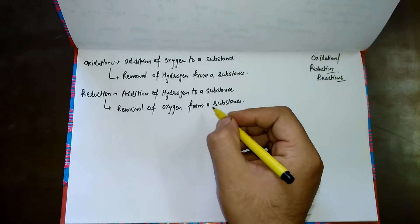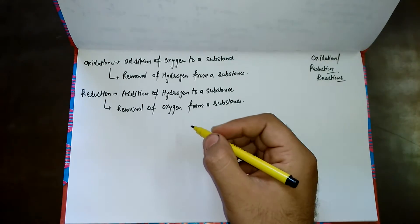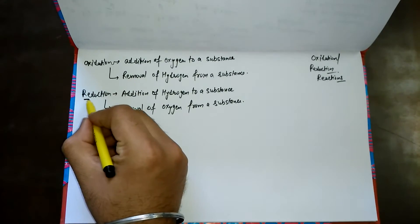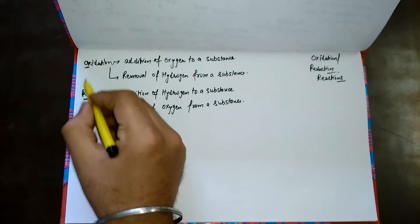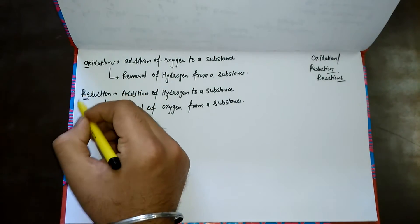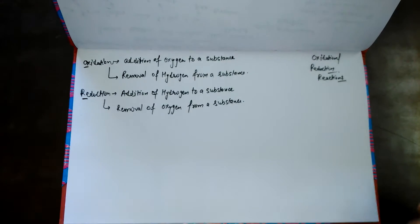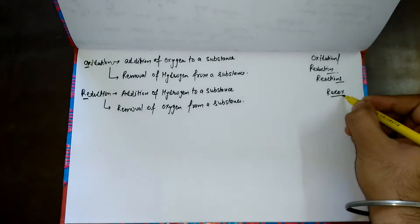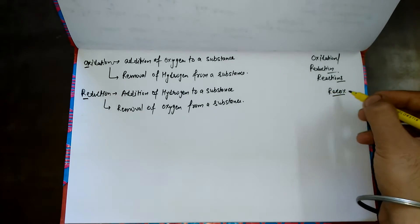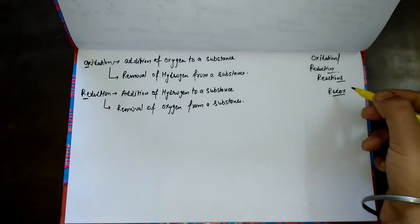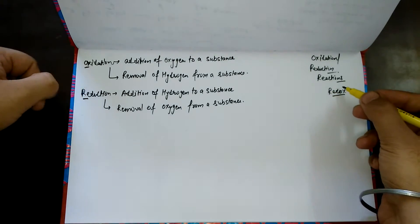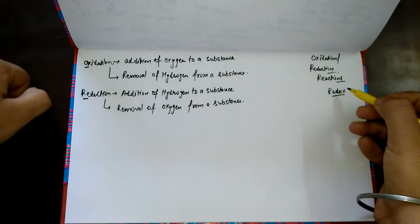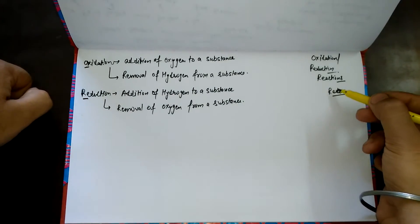Combining the two terms, we get the word redox — RE from reduction and OX from oxidation — so oxidation and reduction reactions are also called redox reactions.